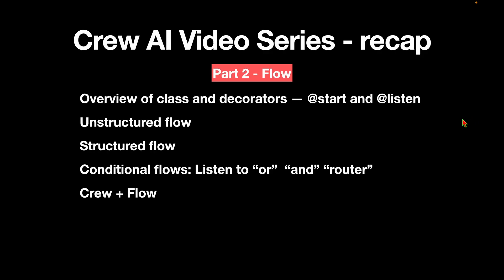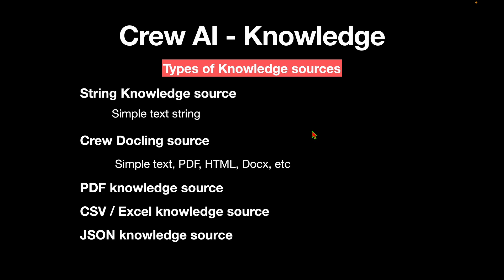Let's start with an overview of what we looked into in the previous video, which was Flow. We saw about classes and decorators — more specifically the start and listen decorators to control the flow. We looked into different types of flows such as unstructured flow, structured flow, and conditional flows such as OR, AND, and router. We also moved on to how we can run a crew of multiple agents and control communication between them using Flow. In this video, let's move on to Knowledge.